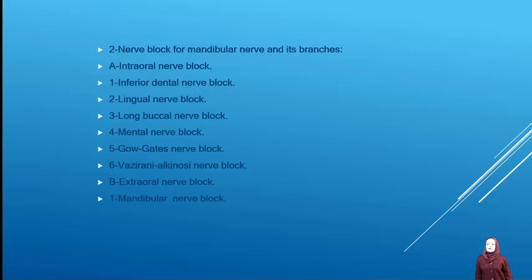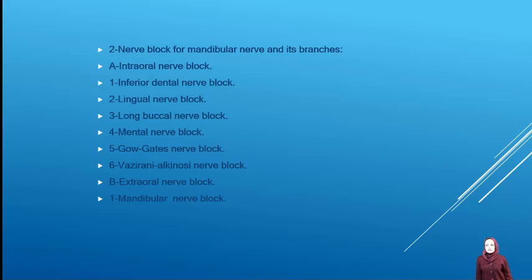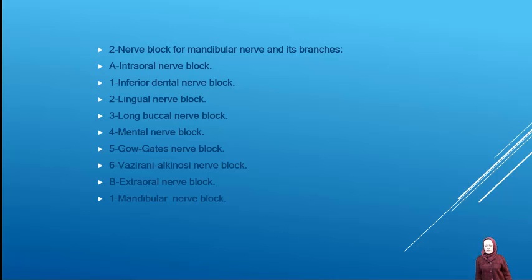Nerve blocks for the mandibular nerve and its branches include: intraoral nerve blocks — inferior dental nerve block, lingual nerve block, long buccal nerve block, mental nerve block, Gow-Gates nerve block, and Vazirani-Akinosi nerve block; and extraoral nerve blocks — mandibular nerve block.